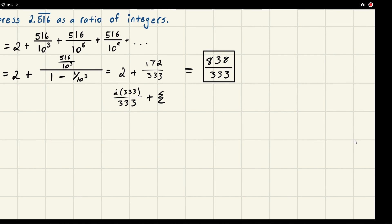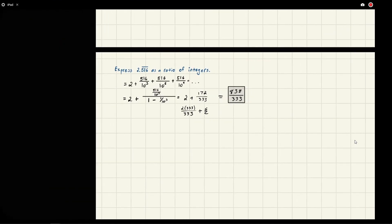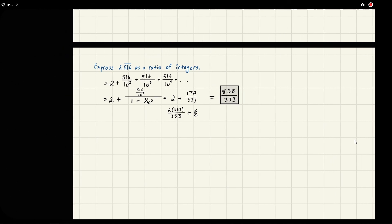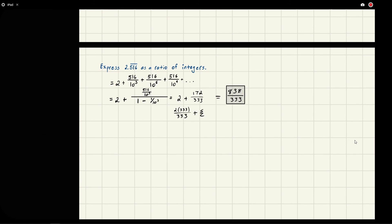There it is: the ratio of two integers that expresses this number 2.516 repeating. If you check it on your calculator, you'll see that it is in fact 2.516 repeating on and on. It might round at the end because your calculator will only go to so many decimals. But that's how you do this. If you have any questions, feel free to let me know, and we'll catch you in the next problem.